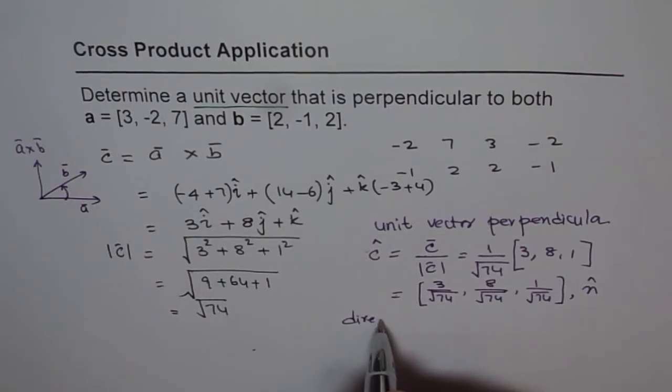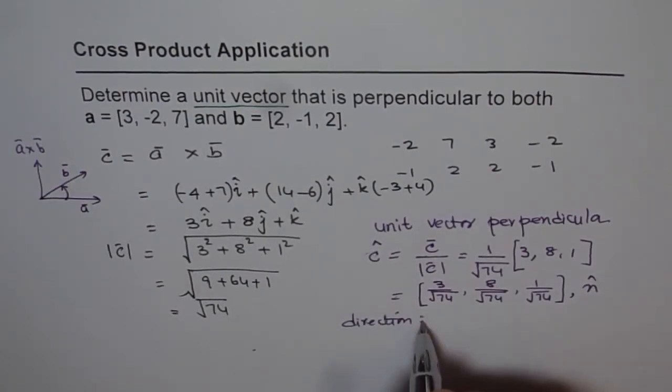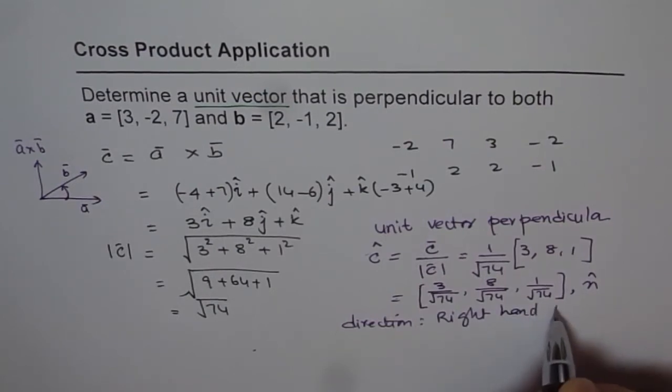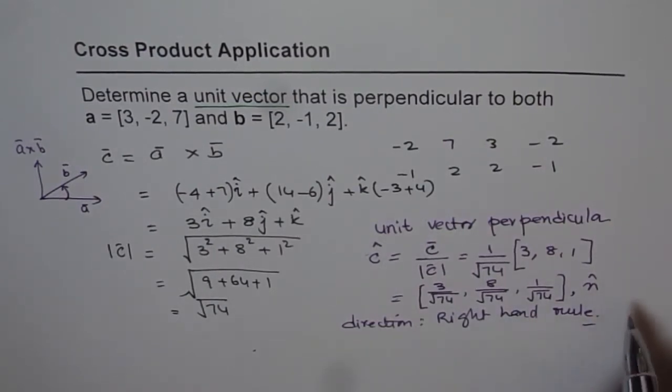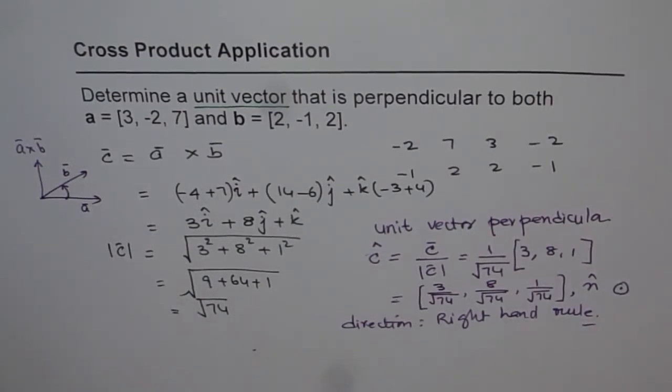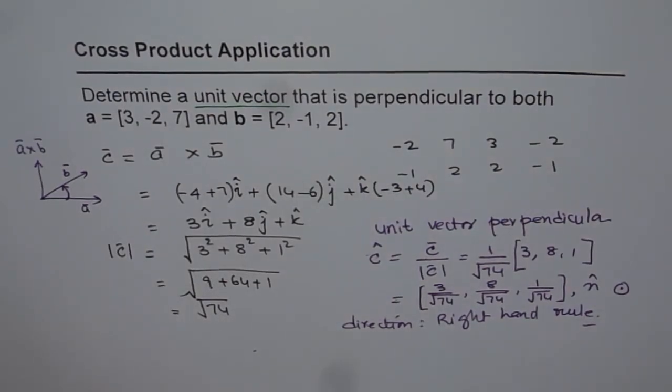So the direction here is given by right-hand rule. So in this case, it is coming out. So we'll just put a dot here. It means it's coming out of the page, and we're assuming it is A cross B. It's kind of like this, okay? Right. So that is how we are going to do such kinds of questions. I hope you understand and appreciate it. Thank you, and all the best. Thank you.